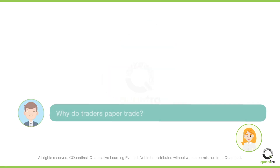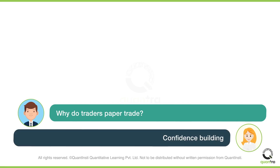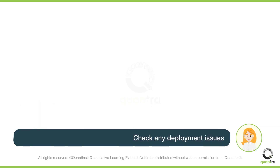John asks Mary why do traders paper trade? Mary says that one of the main reasons is confidence building. Paper trading shows how your strategy will perform in live markets without putting your hard-earned money at risk. You can also check for any deployment issues of your strategy — in paper trading, you can check whether your orders are getting filled entirely, and what is the slippage. Based on the performance, you can tweak the order filling parameters.